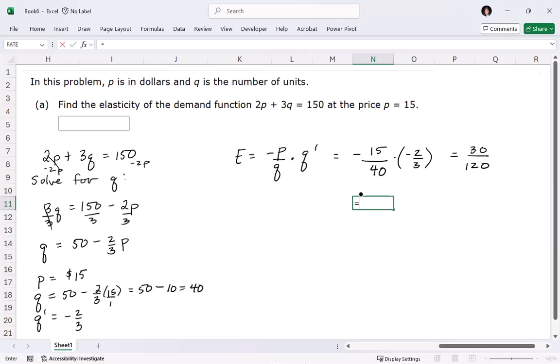And multiply all of that together, you get positive 30 over 120. But for elasticity, it's given as a decimal generally. So we will do 30 divided by 120. 0.25 is the elasticity number.